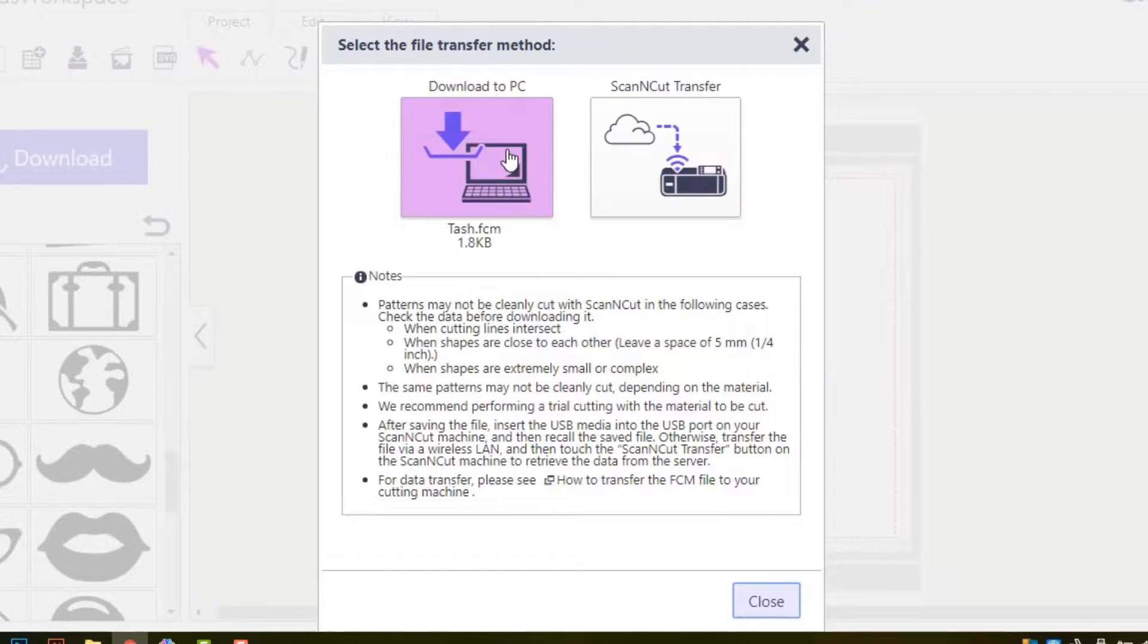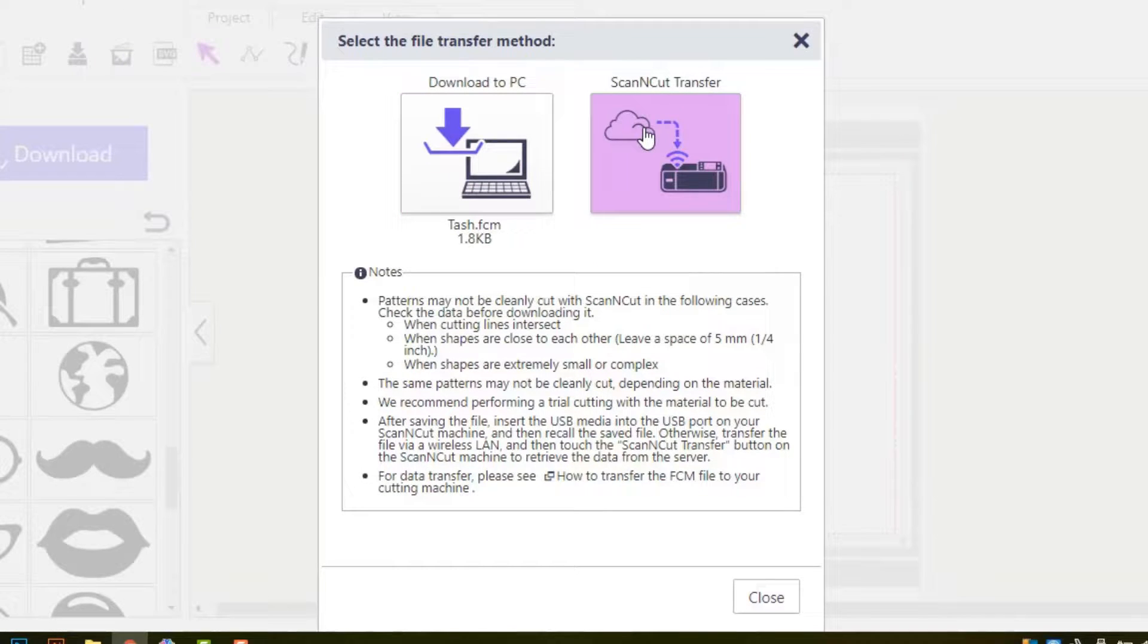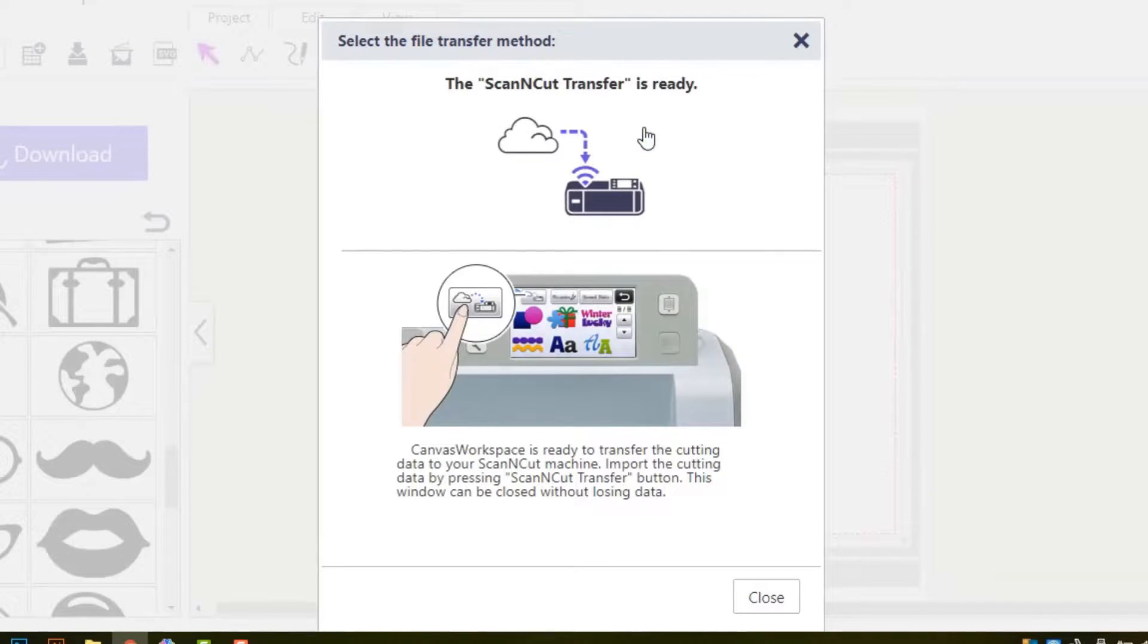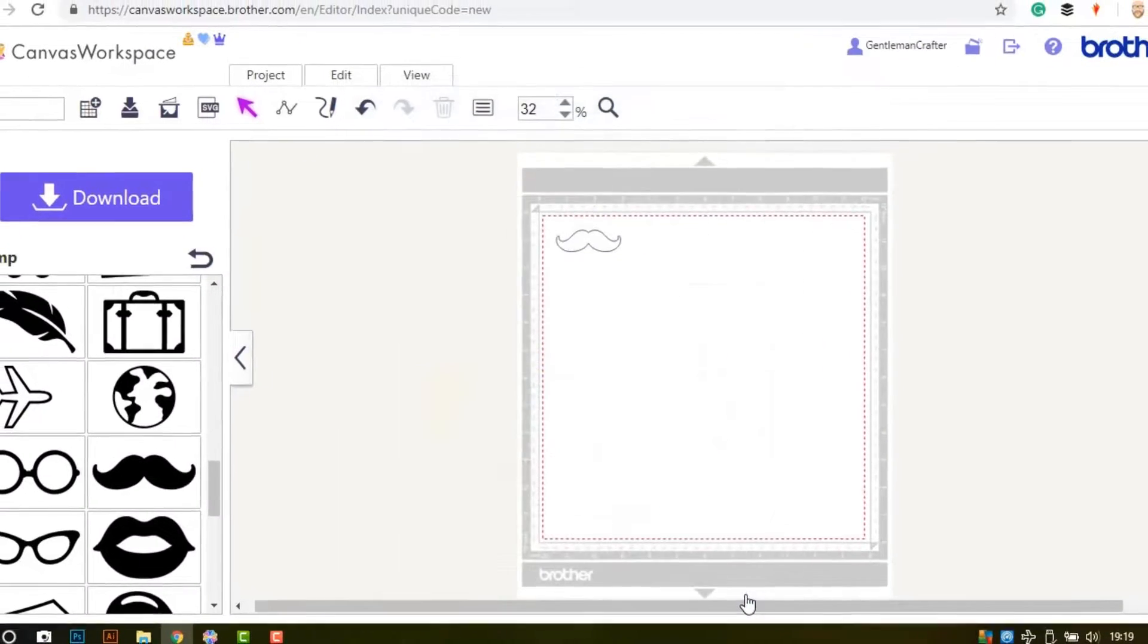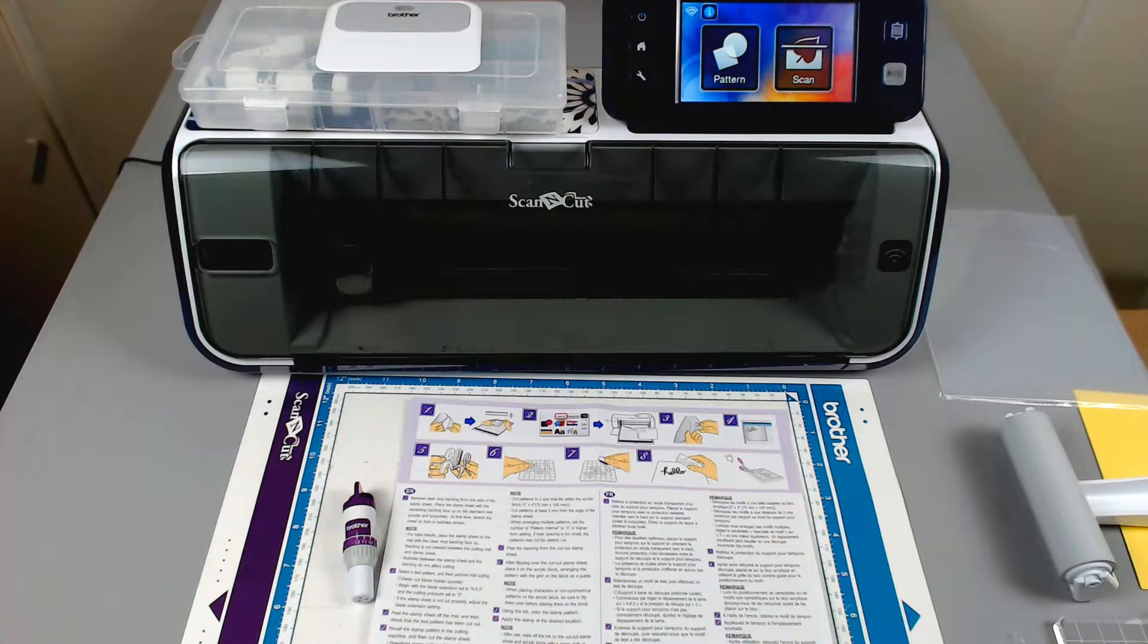If you are using the download to PC method don't forget to right click and save link as. I am using the Wi-Fi transfer method so I click on that icon and Canvas workspace tells me that is ready to access from my machine.